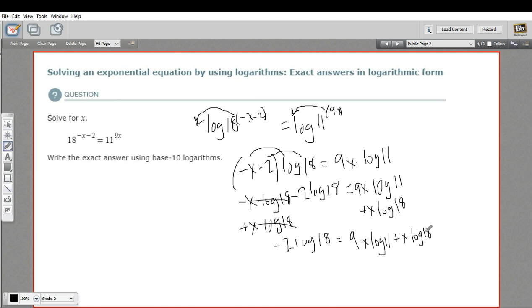Now, you'll notice that I have two terms over here, and both of them have an x in them. So I can factor that x out. So let's do that. So over here, I'll have negative 2 times the log of 18. And over here, if I factor out an x, that leaves 9 times the log of 11 plus the log of 18.